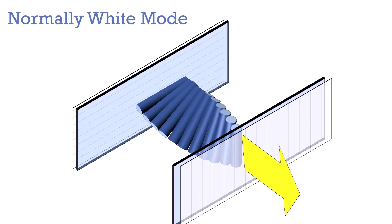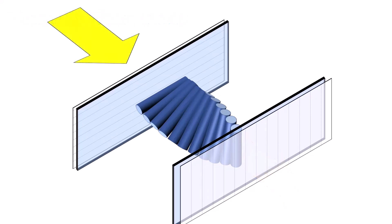This is called the normally white mode, when all the incoming horizontally polarized light rotates to become vertically polarized. But we don't want all of our light to pass all the time, do we?